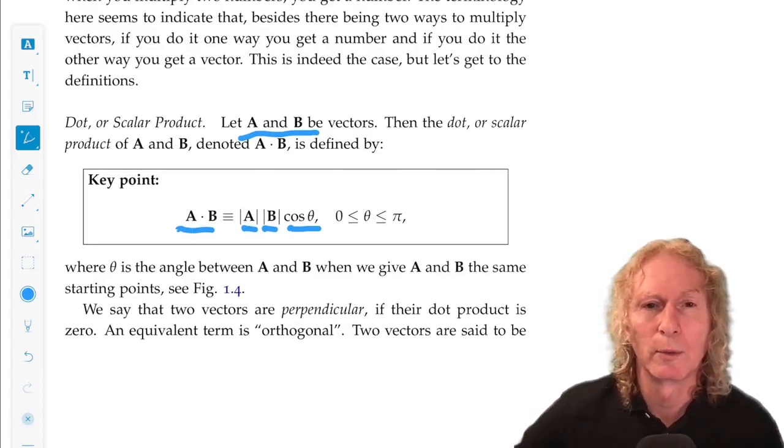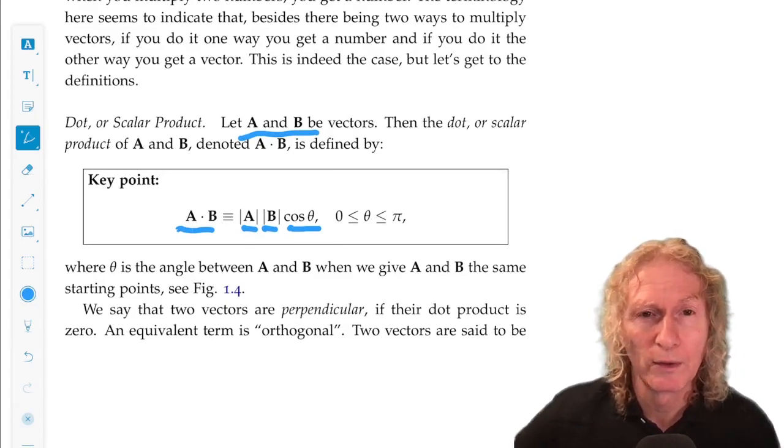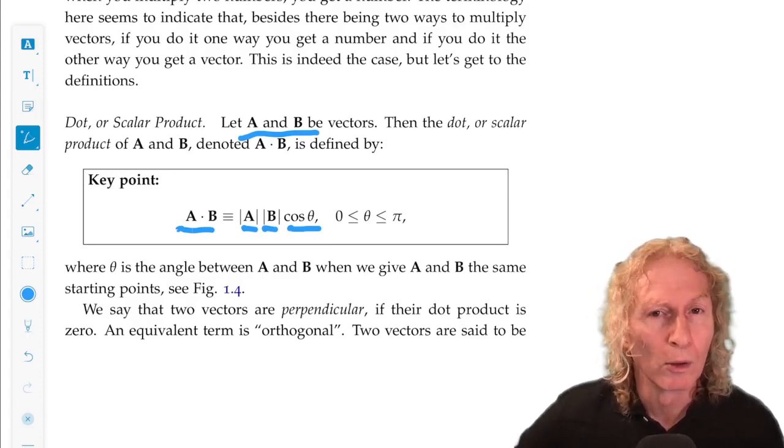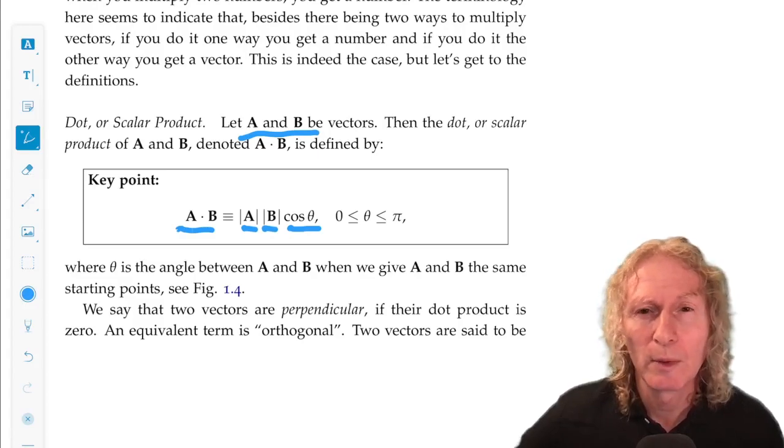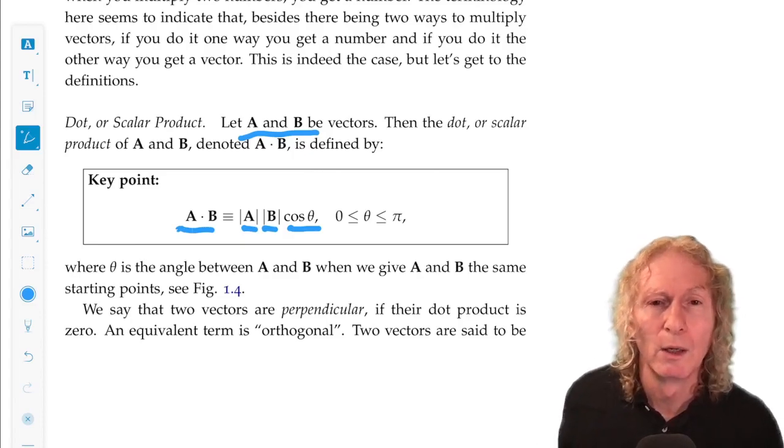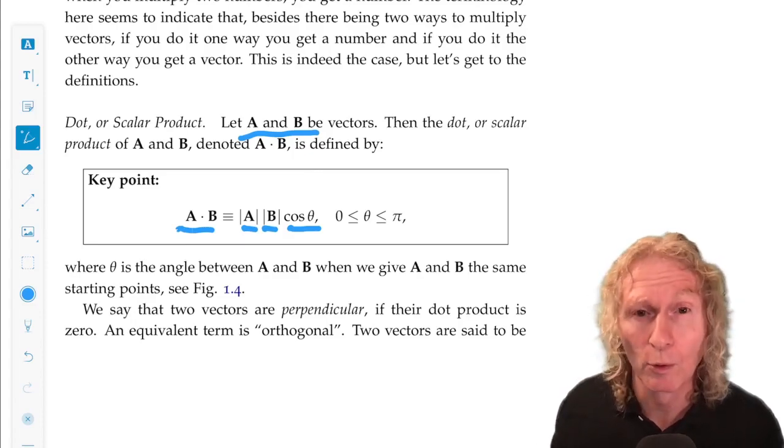So we have some terminology. If a dot b equals 0, we say that a and b are perpendicular or orthogonal. And if a and b happen to be unit vectors, and their dot product were 0, we would say that they were orthonormal.